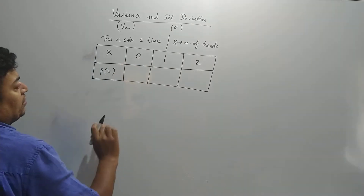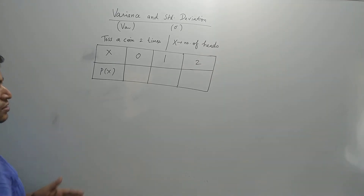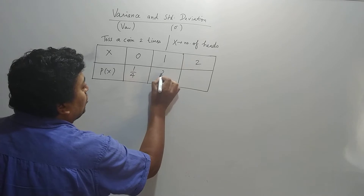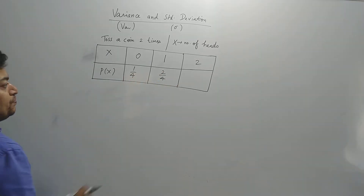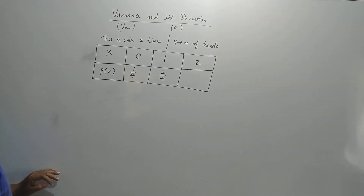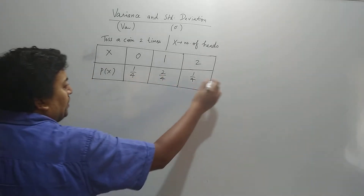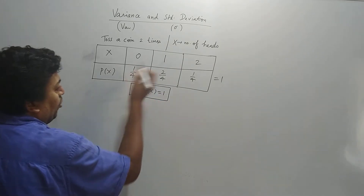Probability for X equal to 0 is 1/2 times 1/2, because the first time tail comes (1/2) and second time tail comes (1/2) — they are independent events — so 1/4. Probability for one head is first head second tail plus first tail second head: 1/2 × 1/2 + 1/2 × 1/2 = 2/4. I'm not simplifying on purpose to keep the same denominator. Probability for 2 heads is 1/2 × 1/2 = 1/4. You can check the sum of probabilities equals 1.